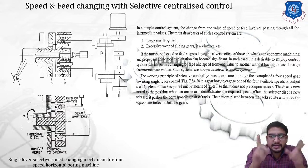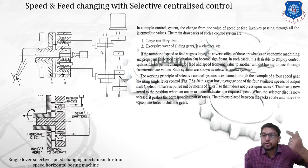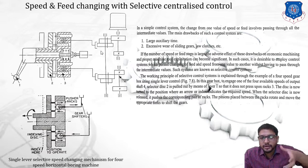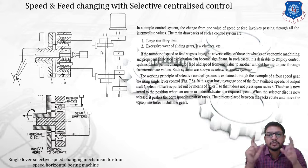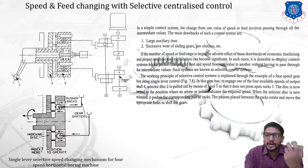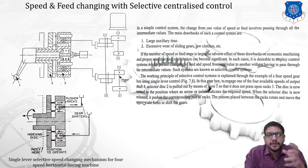To summarize: the indexing disk is pulled out by the lever, rotated to the appropriate position corresponding to the required speed, then released so it pushes back to its original position and pushes the required rack. Once the rack is pushed, it operates the pinion, and the pinion operates the appropriate shifting fork, which shifts the double cluster gear to the required gear pair. This is how we change the speed of the gearbox — that is, of the boring machine.